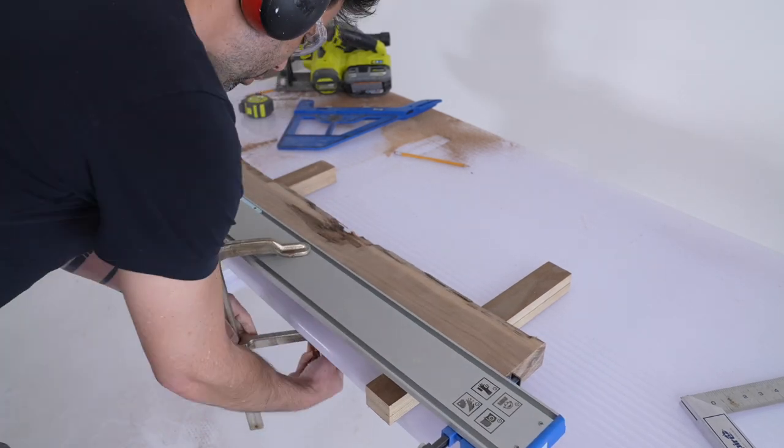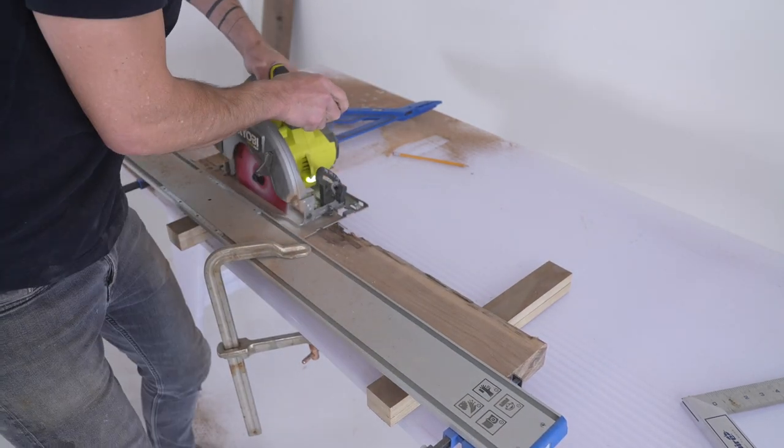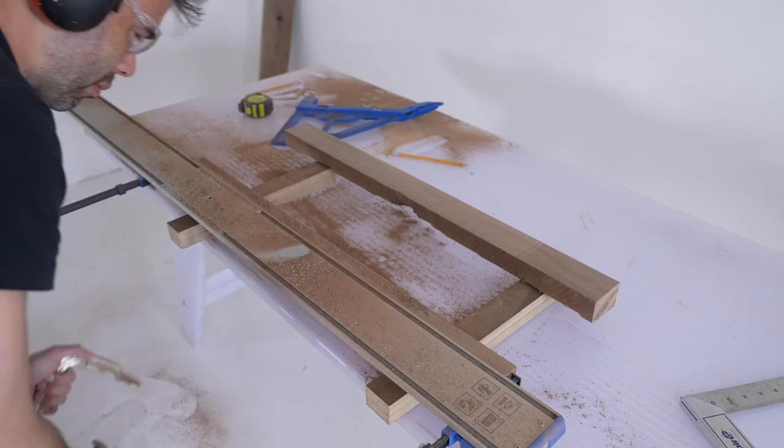I'm making all the cuts with my circular saw. I guide the cross cuts with my Kreg portable cross cut and the rip cuts with my straight edge guide.